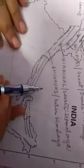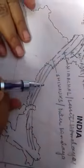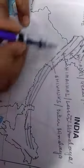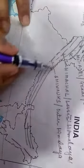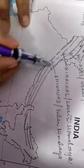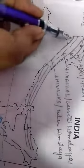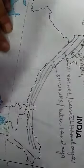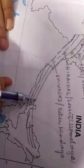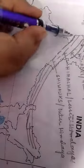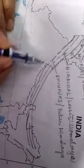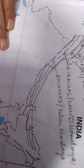In the previous class, I had already introduced these parallel ranges of Himalayas. This is Himadri, the northernmost range; this is Himachal, the middle range; and this is Shivalik, the southernmost range of Himalayas.